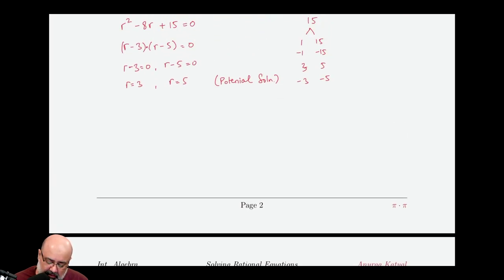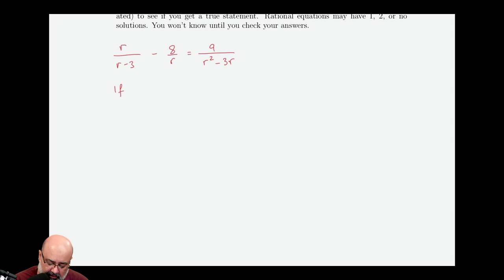We would get three over three minus three. And immediately I know something bad is happening here. I don't even have to bother writing the rest of it because three minus three will be zero. Division by zero is illegal. We cannot do it under any circumstances. So three can never be a solution because the denominator ends up being zero if we plug three in. So r equals three is not a solution.